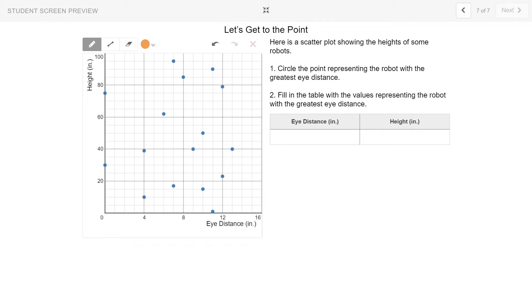We have to circle the point representing the robot with the greatest eye distance and then fill in the table with the values representing the robot with the greatest eye distance. If I want the greatest eye distance, I need to be the furthest to the right. And it looks like this point right here is the point that is furthest to the right, which means that this is the robot that has the greatest eye distance. Looking down at the x-axis, I can see that eye distance appears to be 13 inches. And looking across at the y-axis, it looks like that robot has a height of 40 inches.